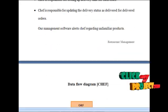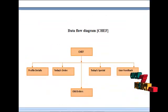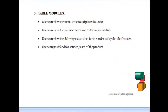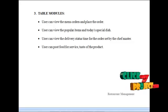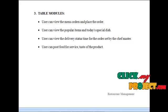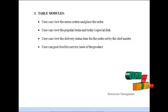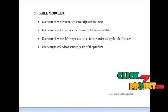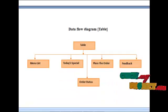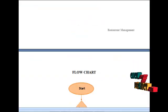The data flow diagram for the chef module is shown below. The next module would be the table module. The table user can login into our site and can view the menu orders and place orders. The table user can view popular items and today's specialties, view the delivery status and time set by the chef, and post feedback for the service and products. The data flow diagram for the chef and table module is shown below. The overall flowchart for the restaurant management is shown below.